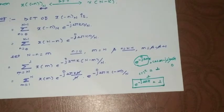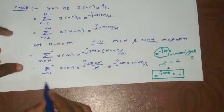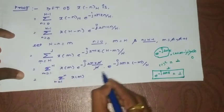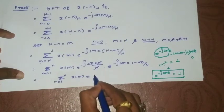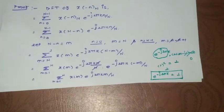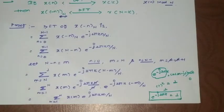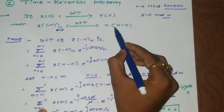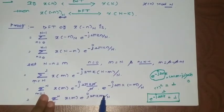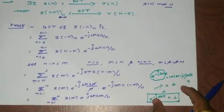After applying e^(-j2πk) = 1, we are left with the summation from 1 to N of x(m)·e^(j2πkm/N). Now observe: we need the result to be X(N-k), but currently we don't have the term N-k. We need to adjust the expression to obtain N-k in the exponent.